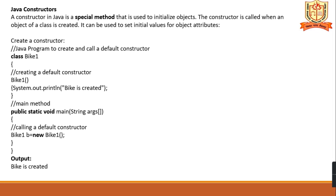What do you mean by a constructor? A constructor in Java is a special method used to initialize the object. The constructor is called when an object of the class is created. It can be used to set initial values for object attributes. The class name is the same as the method name — that is what a constructor is. This is called the default constructor, without parameters.